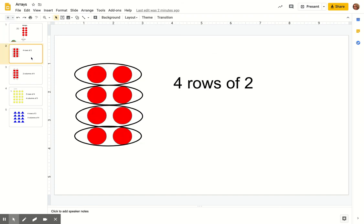So let's look at our first one. I've already circled these for you. These are rows. When we're going horizontal, these are called rows, and we have one, two, three, four rows, and in each of our rows are two red dots. So therefore we have four rows of two.